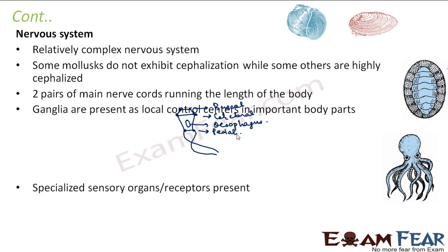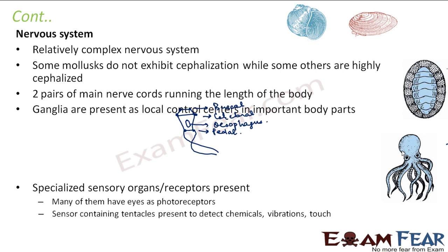Specialized sensory organs and receptors are also present. Many molluscs have eyes as photoreceptors — as you can see in the case of Octopus. Sensor-containing tentacles are also present to detect chemicals, vibrations, and touch. So they are sensitive to touch, chemicals, and vibrations.